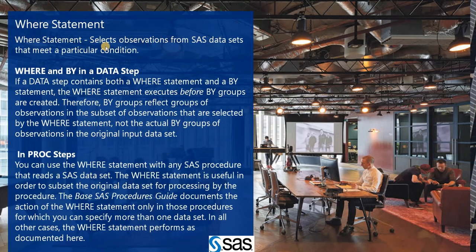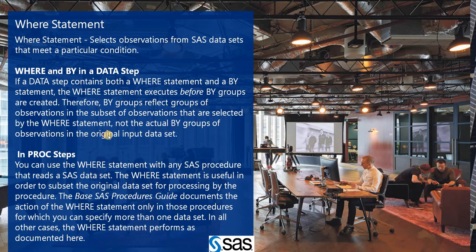The WHERE statement selects observations from SAS data sets that meet particular conditions. It can be used in a DATA step as well as a PROC step. When a DATA step contains both a WHERE statement and a BY statement, the WHERE statement executes before the BY groups are created, so the BY groups reflect subsets of observations selected by WHERE.